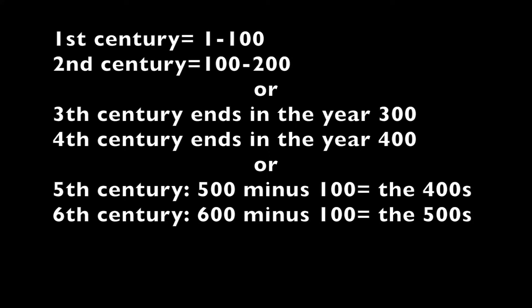I made a little chart to help avoid that mistake. Look at the 2nd century — you're working toward the year 200, which is why the years of that century fall between 100 and 200. Or think of it this way: the 3rd century ends at the year 300, meaning it covers the years 200 through 300. Or just remember to subtract 100 from any century you're given. Given the 6th century? Subtract 100 — you're talking about the 500s, from 500 to 600. Now you wish you'd paid more attention in math class.